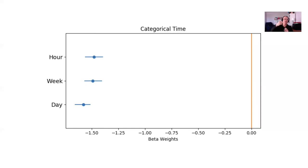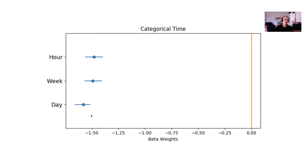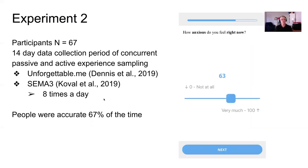We also ran a conditional logit using categorical time, scoring predictors in terms of whether they're on the same day, hour, and week as the original event. The day variable indicates the event mistakenly chosen was exactly one week out — same day, wrong week. Hour means same hour, wrong day. Week means it was in the same week. All of these variables were highly significant. The day error — giving the right day but the wrong week — was the strongest, and this is exactly the error that Cotton made.